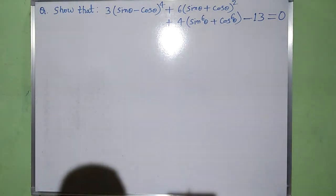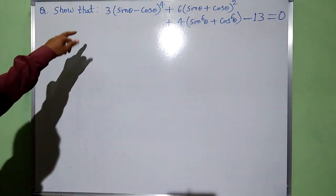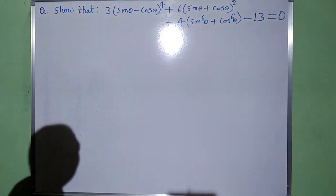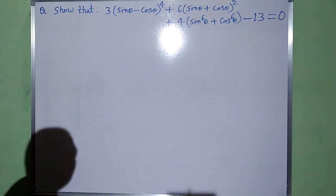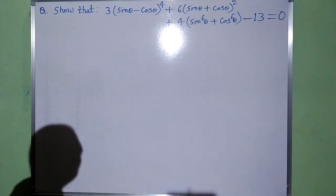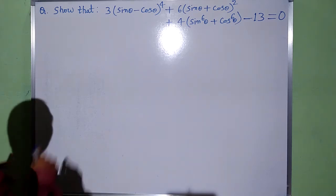Namaste everyone. Here I am going to solve one trigonometric function, which runs like this. We have: 3 into (sin θ − cos θ) whole to the power 4, plus 6 into (sin θ + cos θ) whole square, plus 4 into (sin⁶θ + cos⁶θ) minus 13 is equal to 0. We have to solve it.